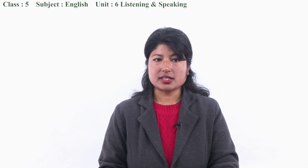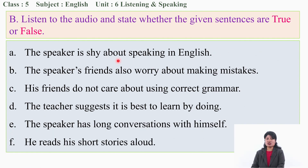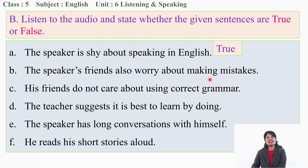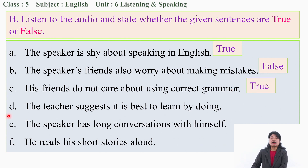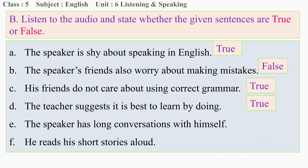Let's check your answers. A: The speaker is shy about speaking English - that is TRUE. B: The speaker's friends also worry about making mistakes - that is FALSE. C: His friends do not care about using correct grammar - TRUE. D: The teacher suggests it is best to learn by doing - TRUE. E: The speaker has long conversations with himself - FALSE, he has short conversations. F: He reads his short stories aloud - TRUE. Once again, you can listen and check your answers.